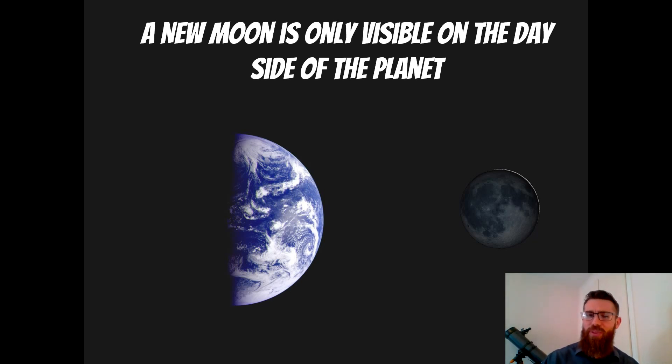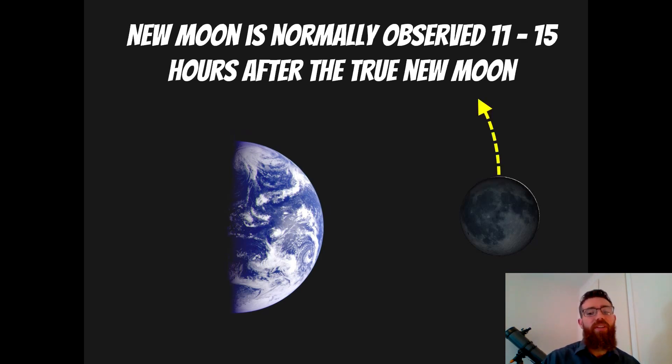But it's not actually that easy to observe a new moon because a true new moon is not going to be reflecting any light back from the Sun to the earth because it's right in the middle. None of that light from the Sun can reflect back towards the earth. You might be able to see a little bit due to earth shine.